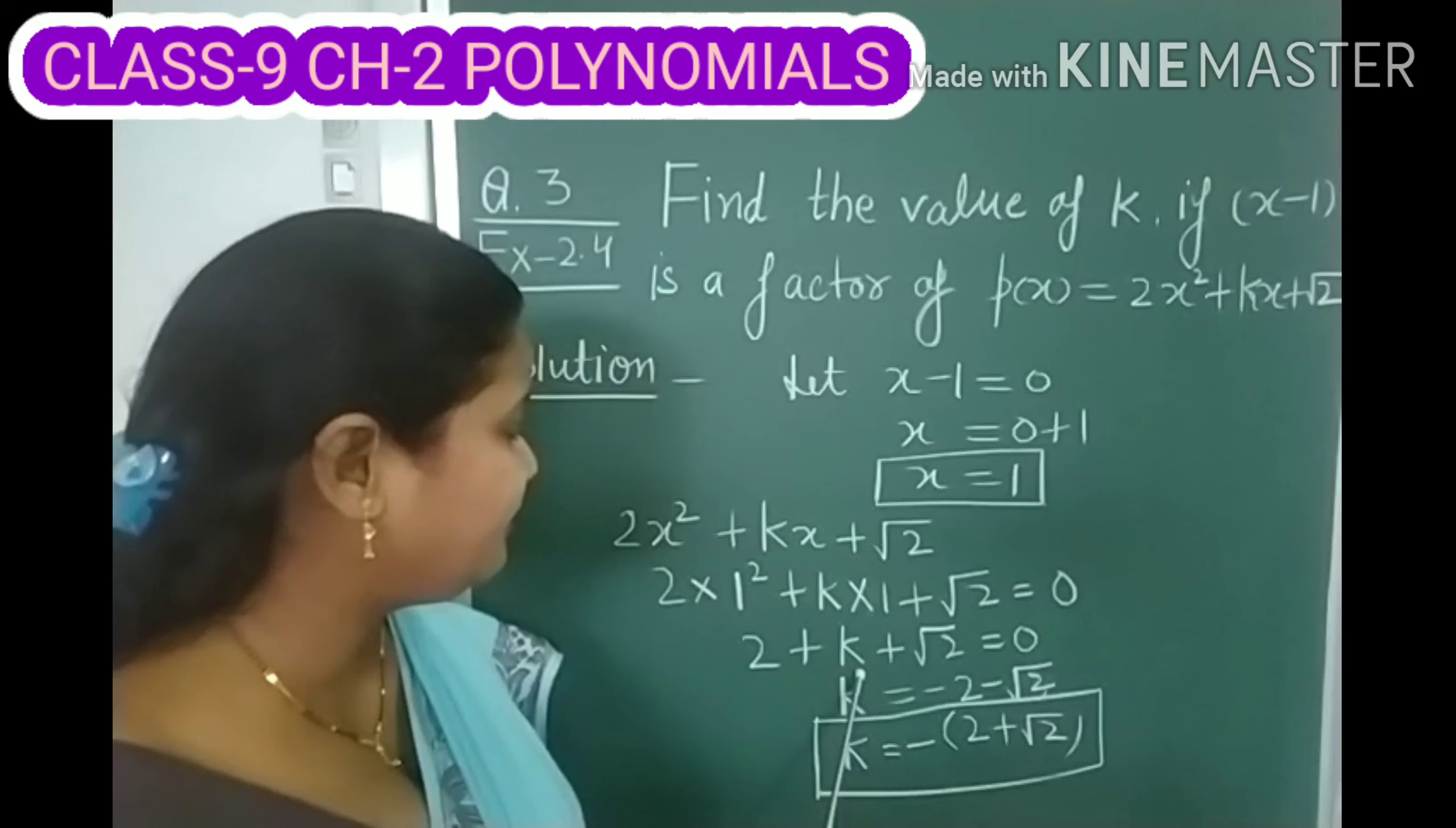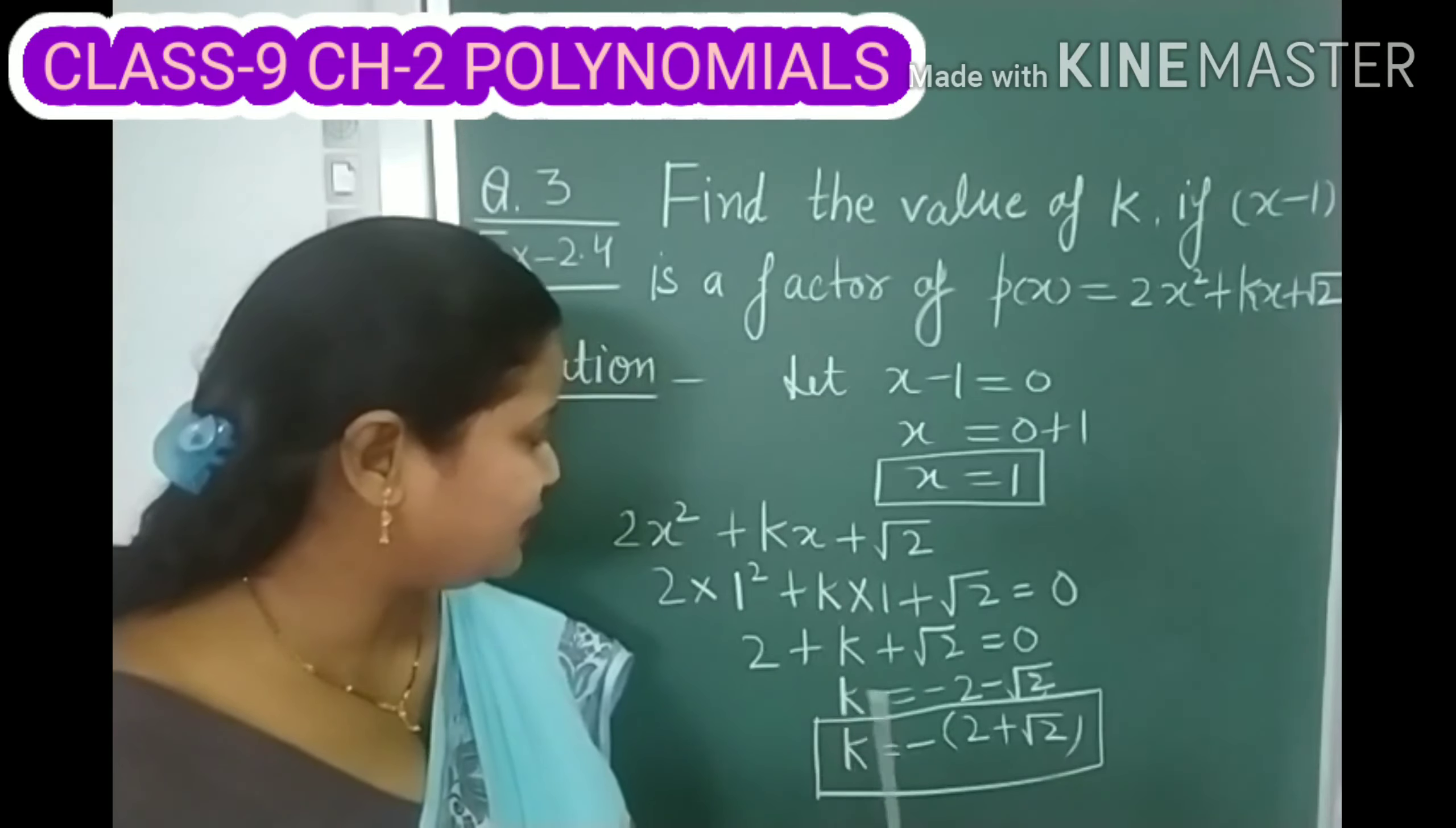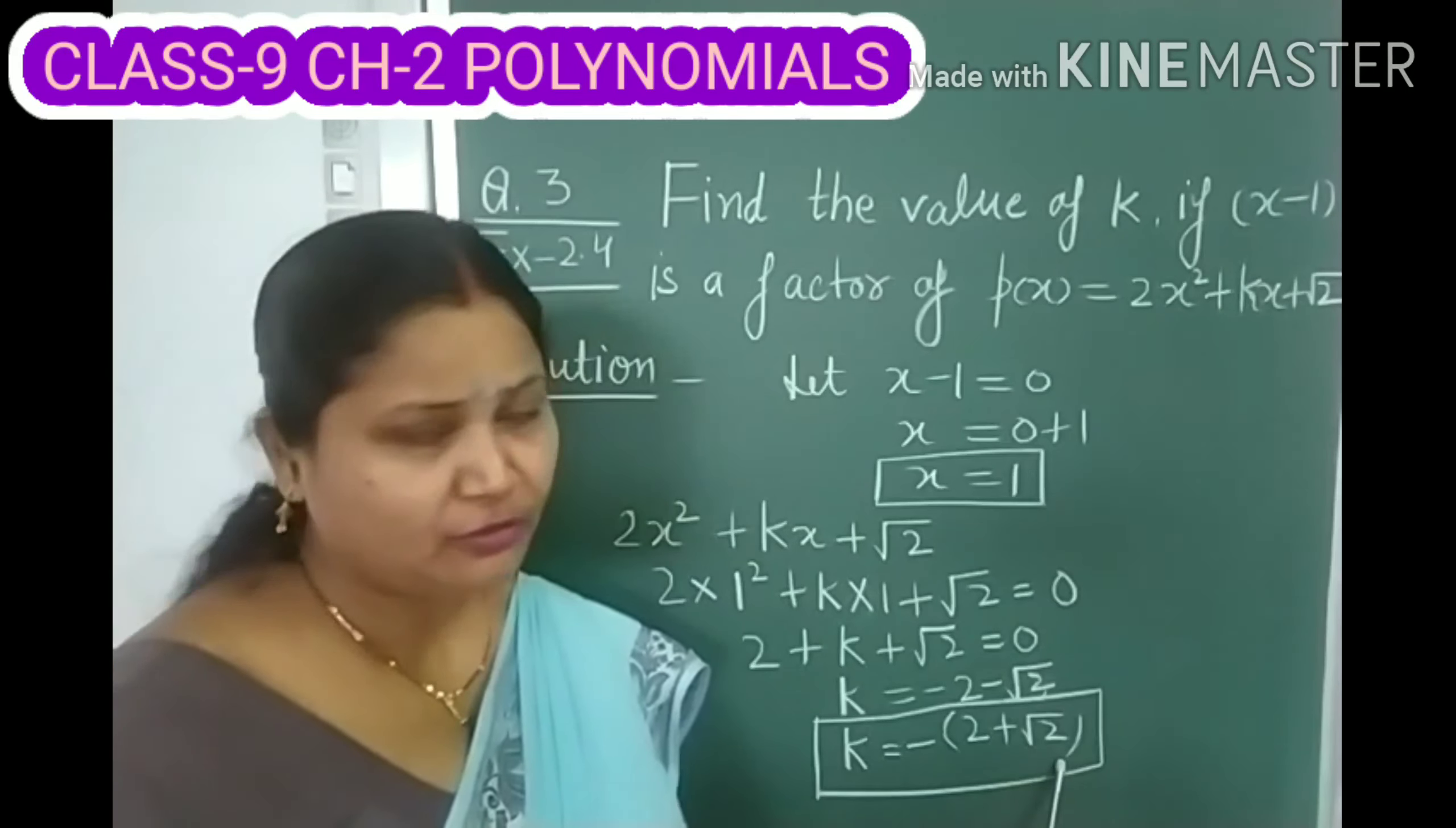So to find the value of K, what we will do? We will take this 2 and root 2 to the right side. Then this plus 2 becomes minus 2 and this plus root 2 becomes minus root 2. And if I take negative sign common, then the value of K becomes minus of 2 plus root 2.